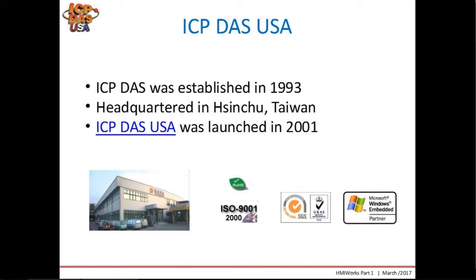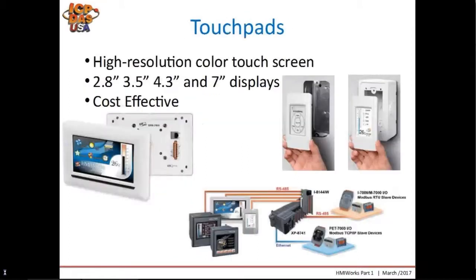ICPCON was established in 1993. The headquarters is located in Hsinchu, Taiwan. ICPCON USA was launched in 2001 to support the North and South American markets. We have over 200 R&D engineers and we work closely with them to add new features to our products, develop new products, and to support our customers. Most of our products are RoHS compliant, which means they are lead-free. We also have our ISO 9001 certification.